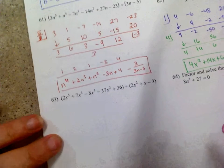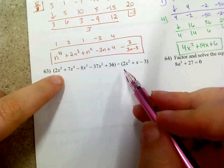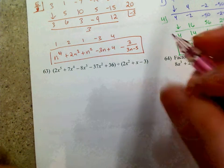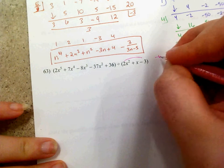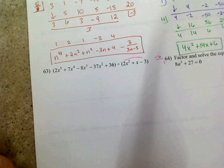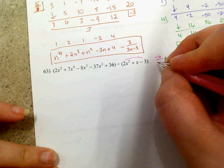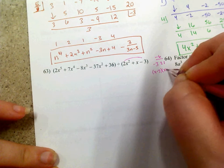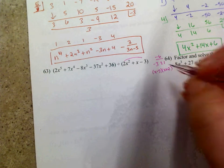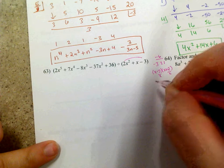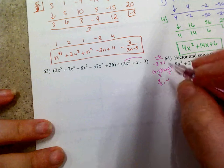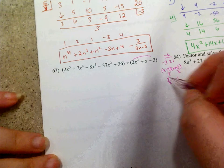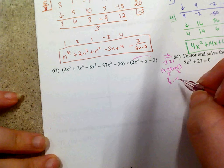Number 63. We are dividing by a quadratic, so we need to factor it first. The factors of negative 6 that add up to positive 1 are positive 3 and negative 2. So we get x minus 3 and x plus 2, but remember to divide by 2 — giving roots of positive 3 halves and negative 1. I'll start with negative 1 in the half box. The degree is 5, with coefficients 2, 7, negative 8, negative 37, 0, and 36 — noting there's a missing x term so we place a 0 placeholder.